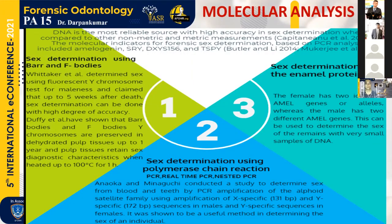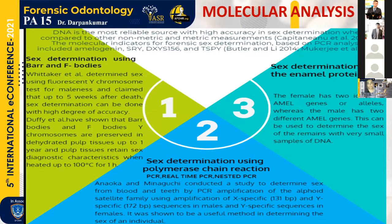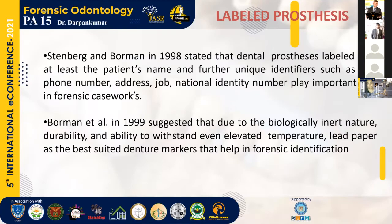Molecular analysis, used alongside other methods, gives accurate results. Barr bodies and F bodies present in the tooth pulp give accurate results because tooth pulp tissue remains viable for up to one year for diagnostic purposes. The fluorescent Y chromosome test can be used for male patients. Sex determination can also be performed using polymerase chain reaction — real-time PCR and nested PCR — which also provides accurate results.